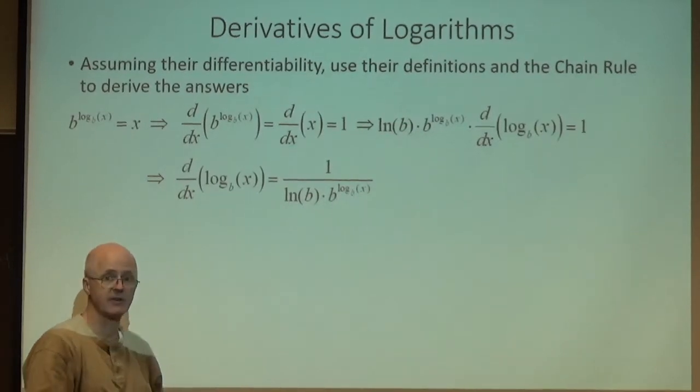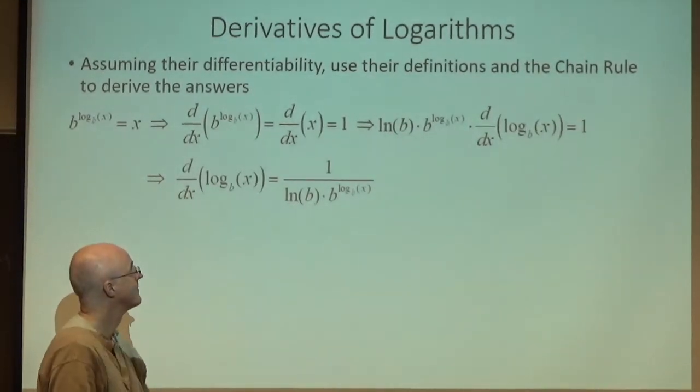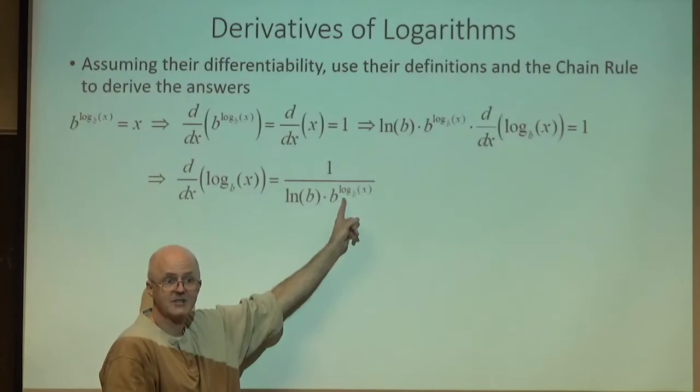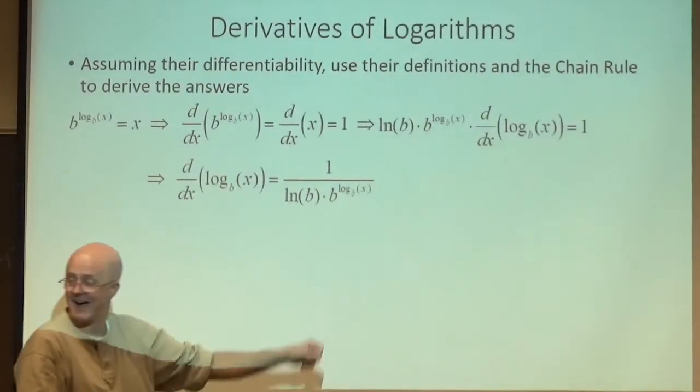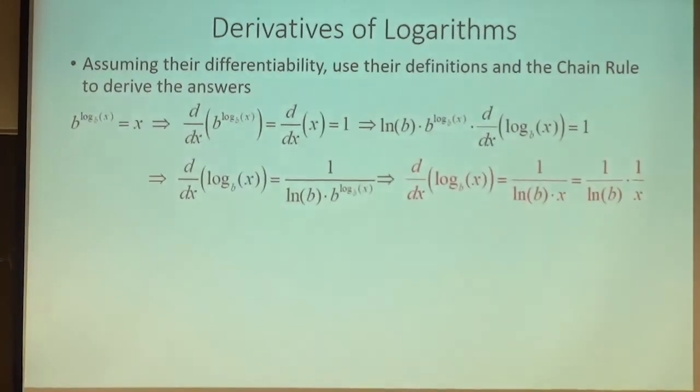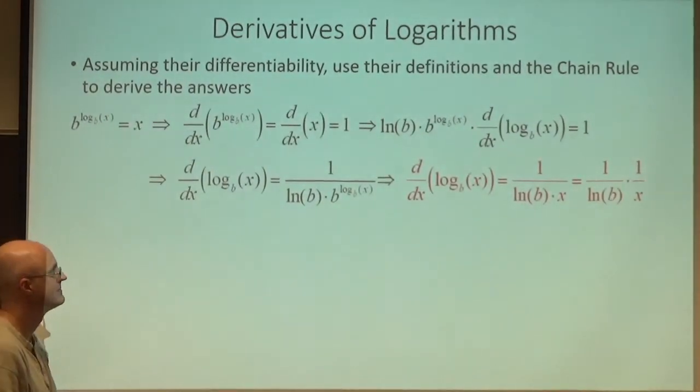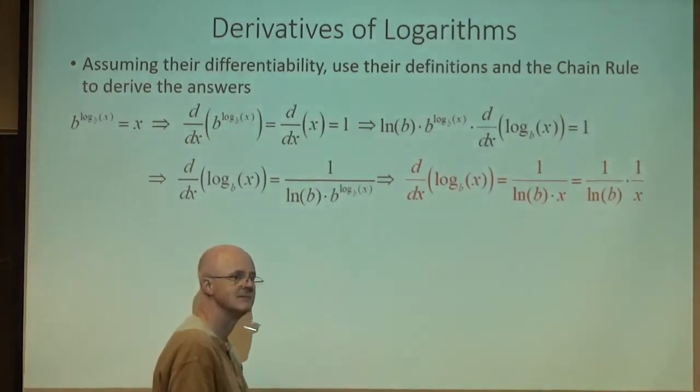Like that. Just divide both sides by natural log of b times b to the log base b of x. Kind of a nasty looking derivative, but it can be simplified. Because this can be simplified just to x. There's the answer, written in a couple slightly different forms. Either way is okay.